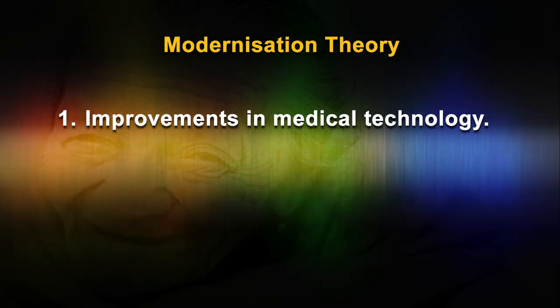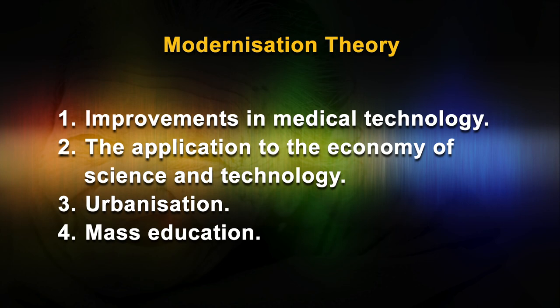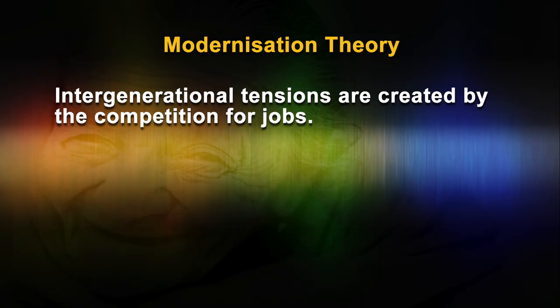The first parameter is improvement in medical technology. The second is the application to the economy of science and technology. The third is urbanization. And the fourth is mass education. Cowgill and Holmes argued that improvements in health care led to a decrease in the potency of death, resulting in an aging of the working population and a decrease in job opportunities for the young.